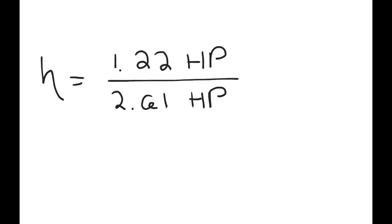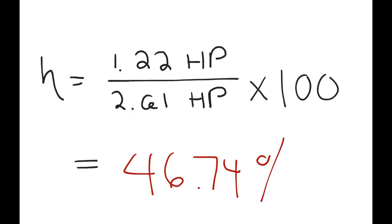Okay, so now that we have our system output and our system input both in horsepower, we can simply calculate the percentage of the efficiency of the total system. 1.22 over 2.61, multiply that by 100 to get it to a percentage decimal, and it comes out to an efficiency of 46.74%.